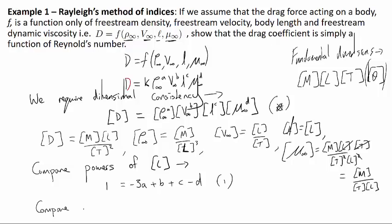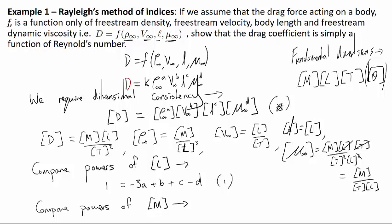So if we compare powers of M next - we find, just going back here, on the left-hand side we've got an M in this drag term, which is just effectively to the power 1. We've got an M in the rho infinity term raised to the power A, so it's going to be an A. There's no M in V infinity, no M in the L term, and there's an M to the power D in the mu infinity term. In fact, this is so simple, we could just write it down here. So we get 1 = A + D. Let's call that equation 2.